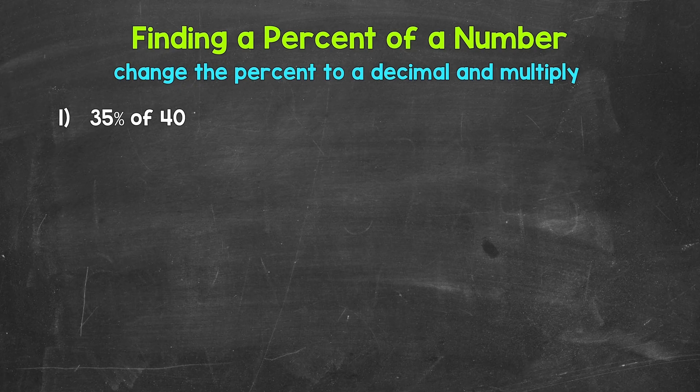Let's jump into number one, where we need to find 35% of 40. Now remember, percent means per 100. In other words, percent means for every 100, or out of 100. So 35% is 35 over 100 as a fraction.